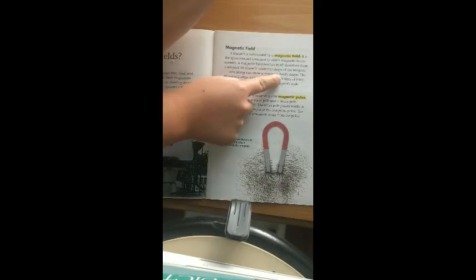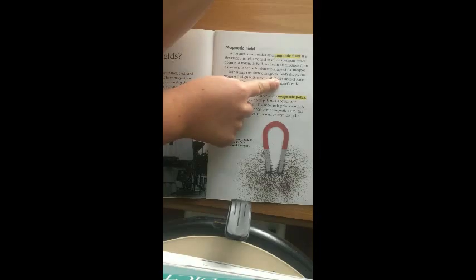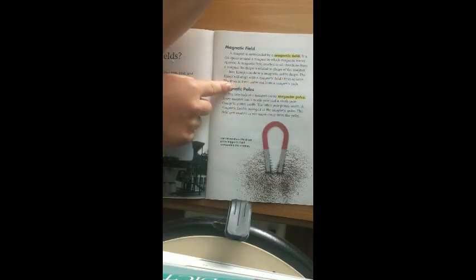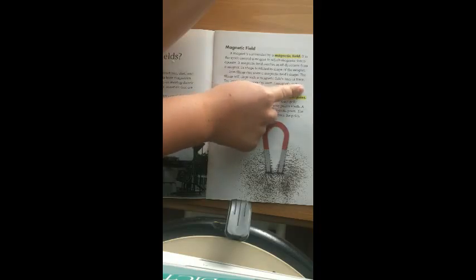Iron filings can show a magnetic field's shape. The filings will align with a magnetic field's lines of force. The lines of force curve out from a magnet's ends.